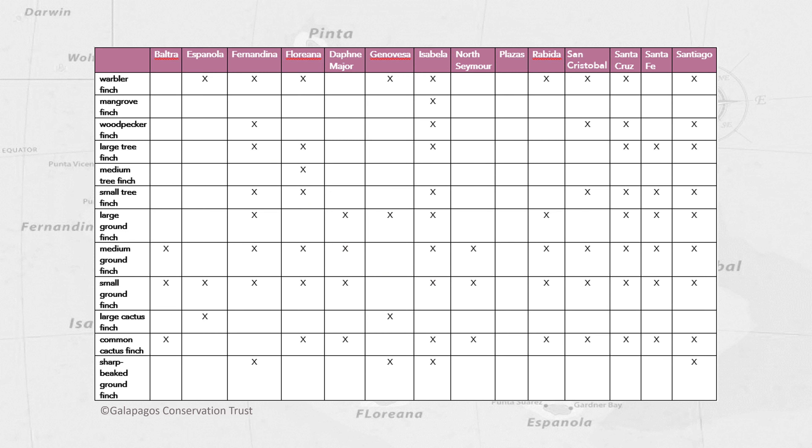Each of the islands within the Galapagos Archipelago have different environments, weather systems and habitats. Isabela and Fernandina are arid, hostile islands, while Santa Cruz and San Cristobal have quite humid, almost tropic-like habitats.